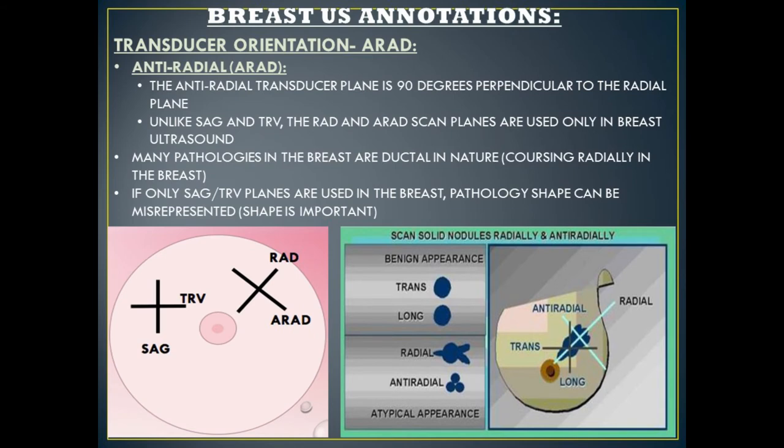Our next method of breast ultrasound annotation is a transducer orientation known as ARAD, which stands for anti-radial. The anti-radial transducer plane is exactly 90 degrees perpendicular to the radial plane. Unlike sagittal and transverse, the radial and anti-radial scan planes are used only in breast ultrasound. Many pathologies in the breasts are ductal in nature, coursing radially in the breast. So if only sagittal and transverse planes are used, the shape of a pathology can be misrepresented — and shape is really important in breast imaging.